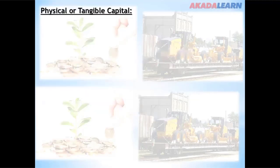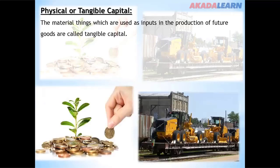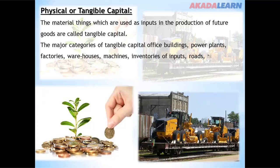Capital can exist in different forms. We have physical or tangible capital — material things used as inputs in the production of future goods. The major categories of tangible capital include office buildings, power plants, factories, warehouses, machines, inventories of inputs, roads, and highways.